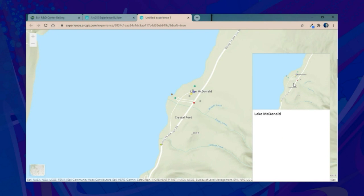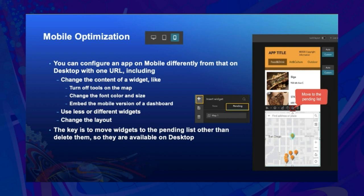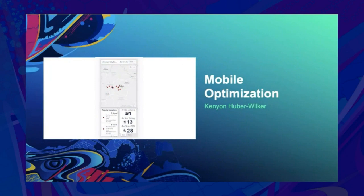It's important to run apps on mobile, so we want to emphasize the capability of optimizing apps on mobile. For example, on mobile you might want to turn off the search tool on the map but keep it on desktop, or simply use fewer widgets. The key is to move widgets to the pending list rather than deleting them, so they remain available on desktop.